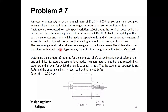The proposed generator shaft dimensions are given in the figure. The stop end, which is the coupling end, is to be machined with a sled-runner type keyway, where two lines visible in the figure indicate the keyway area. The coupling connects to the shaft through this keyway, and the fatigue stress concentration factor for this keyway is 1.61.